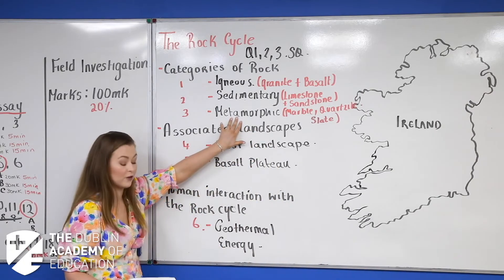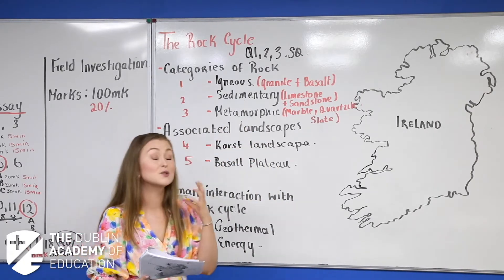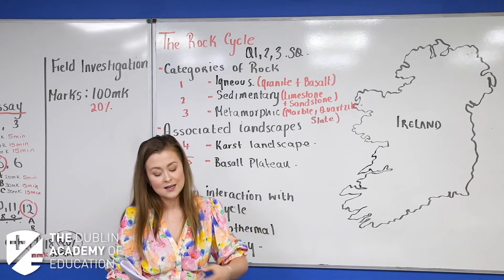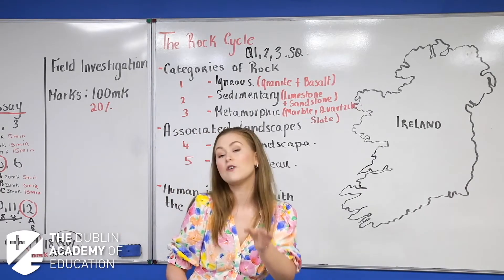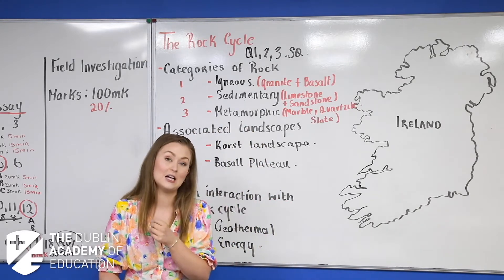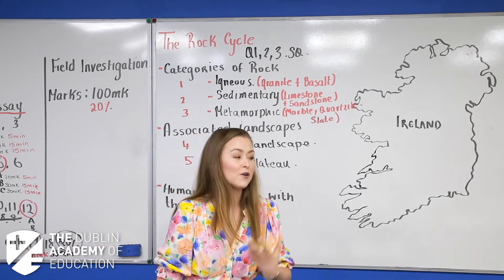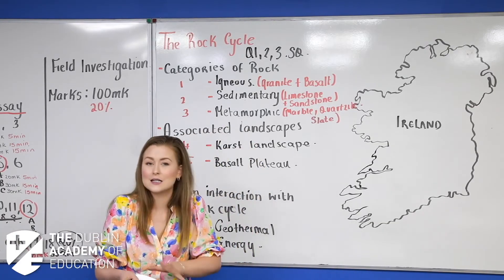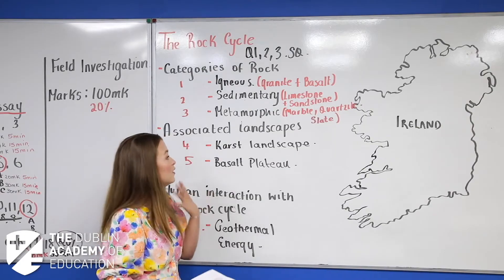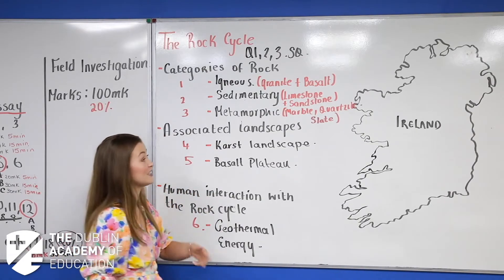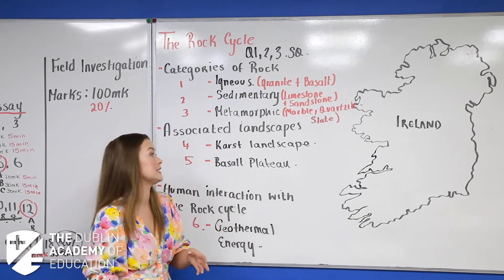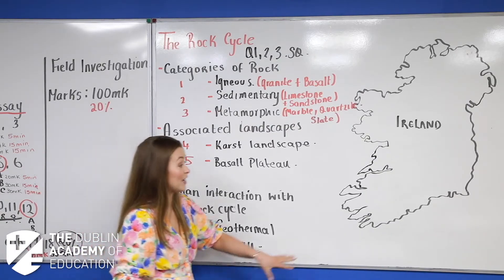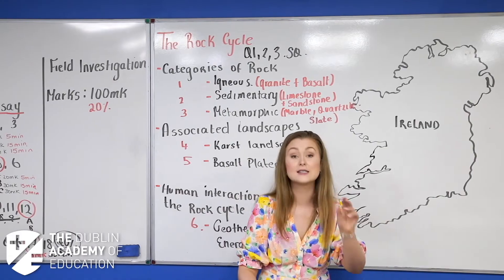Finally, our metamorphic rocks. These are rocks which were once igneous and/or sedimentary rocks that were changed as a result of — highlight — great heat and/or pressure: heat from inside the earth's mantle and pressure from plate tectonics and plate movements. Examples include marble, quartzite, slate, schist, and gneiss — that's pronounced 'nice' at the end.